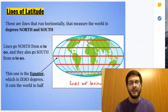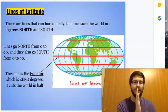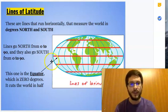So I'm going to breeze through this pretty fast, but on any map, you have what are called lines of latitude, and then you have lines of longitude. Latitude lines include the equator, which is the line that cuts the world in half, and it goes up to 90, and it also goes down to 90.